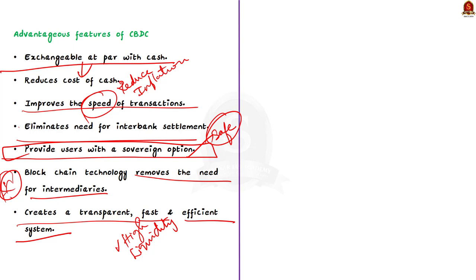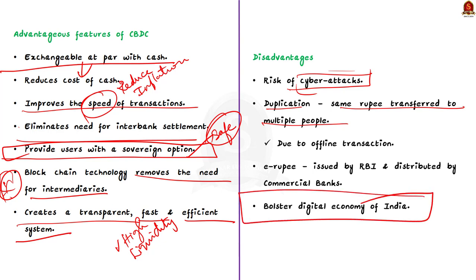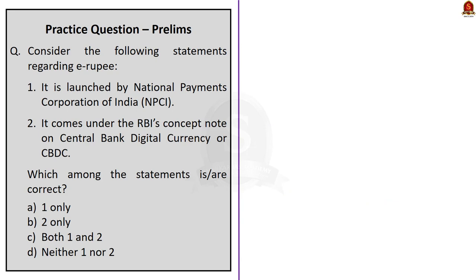The disadvantages of CBDC include the risk of cyber attacks and the possibility of duplication — where the same rupee is transferred to multiple people due to offline transactions. The RBI must apply some limits or use other technologies to address this duplication issue. Despite these disadvantages, E-Rupee issued by RBI and distributed by commercial banks will further bolster the digital economy of India. In this discussion we saw about E-Rupee, CBDC, how it works, and its advantages and disadvantages.